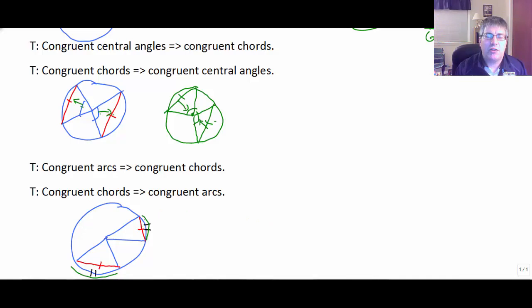It's not a very good diagram, but congruent arcs imply congruent chords. And then, again, the converse of that is true. If the chords are congruent, then the arcs are congruent.